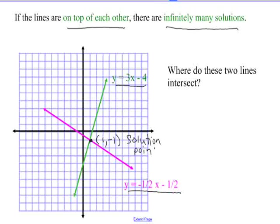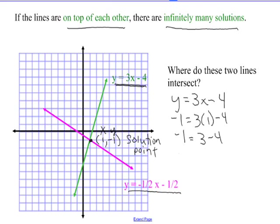The solution point is the point that works in both equations. If I take this ordered pair (1, -1) and plug it into both equations, it should work. Let's start with the green equation, y equals 3x minus 4. I'm going to plug in 1 for x and negative 1 for y. So negative 1 equals 3 times 1 minus 4, and 3 minus 4 is negative 1. That point does work in our first equation.